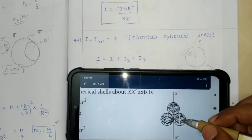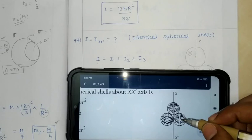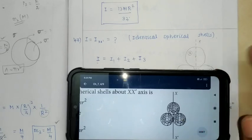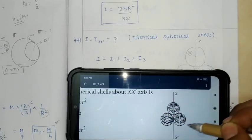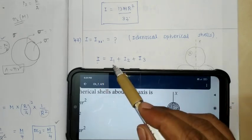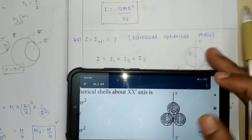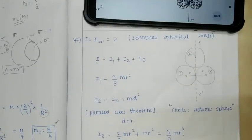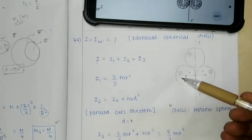For three spherical shells, moment of inertia - find individual moments then add. The system moment of inertia I is equal to I1 plus I2 plus I3, where these represent the first, second, and third spherical shells.